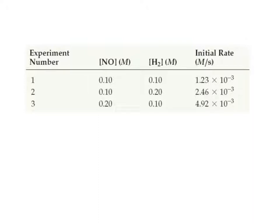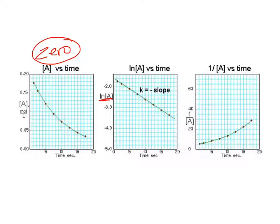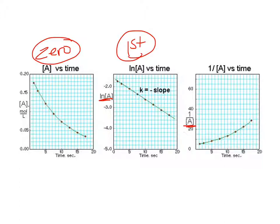Or you might need to know how to find the orders of the reactants graphically. If you were to plot concentration versus time and get a straight line, that indicates the reaction is zero order with respect to that reactant. If you graph the natural log of concentration versus time and get a straight line, that indicates first order. And if you graph one over concentration versus time and get a straight line, that indicates second order. We call these characteristic plots, so you should know which characteristic plot goes with which order.